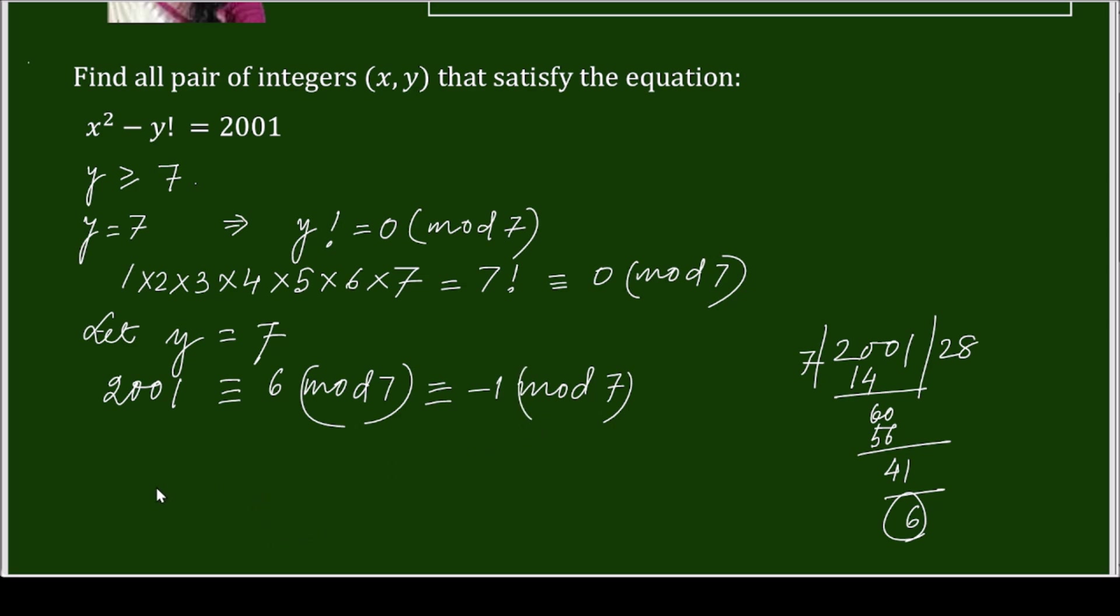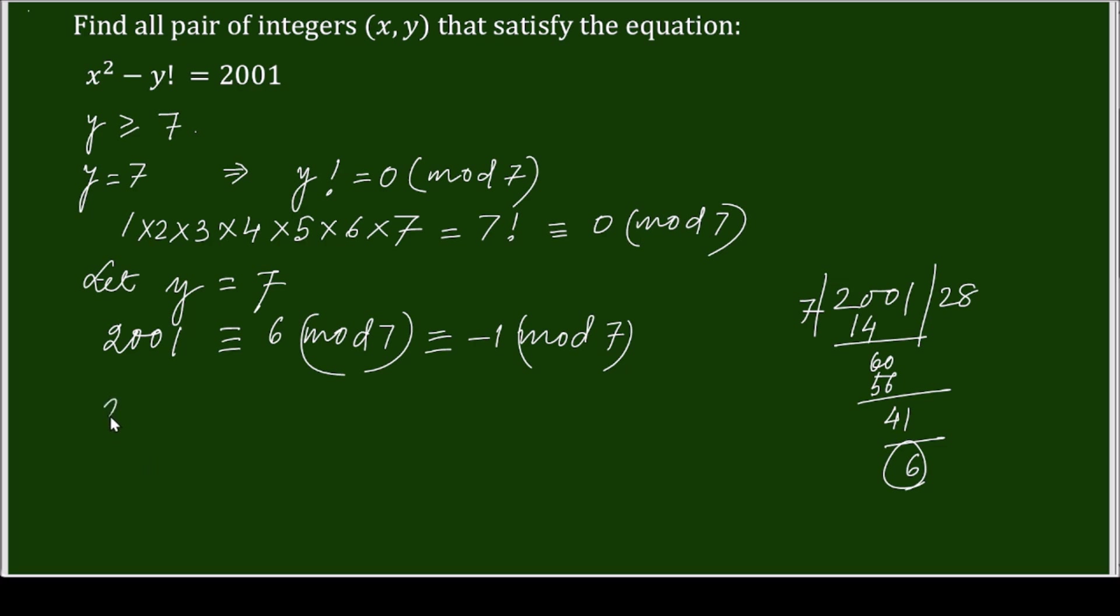So now if I will put in the equation given here x square minus y factorial equals to 2001. So x square, when y factorial I have taken 0 modulo 7, that means x square equals to your 2001 modulo 7, that is your nothing but your minus 1 modulo 7. So x square is congruent to 6 modulo 7.